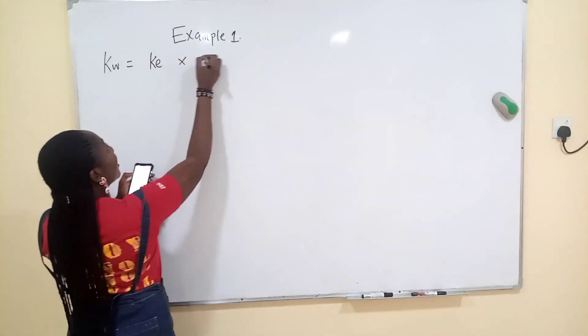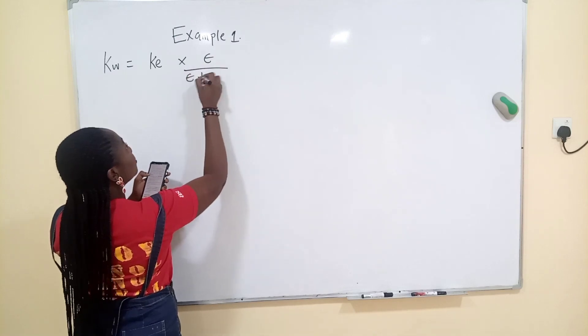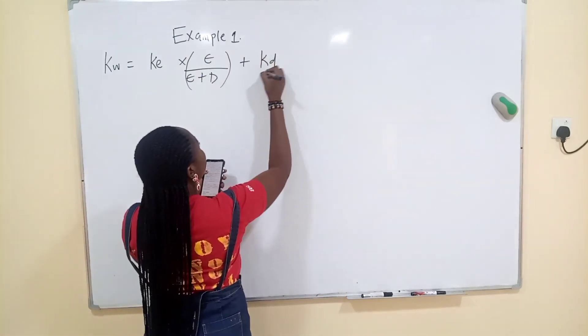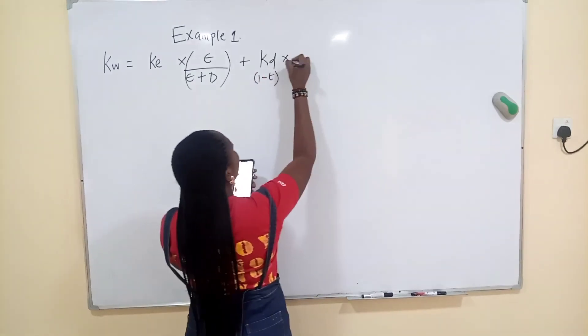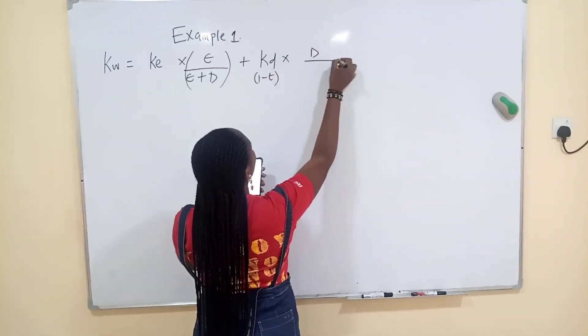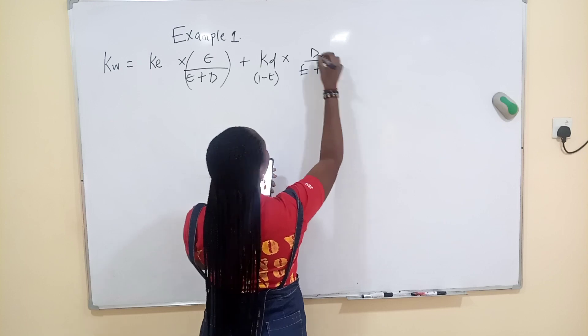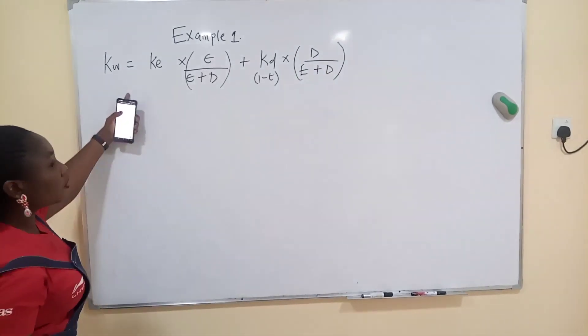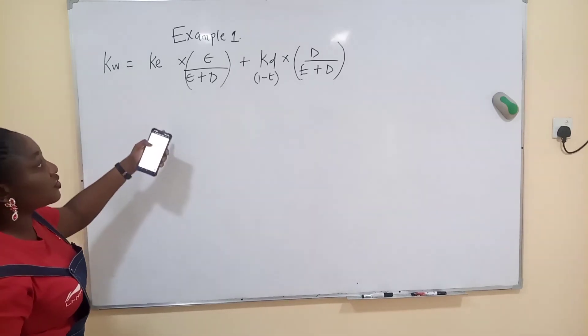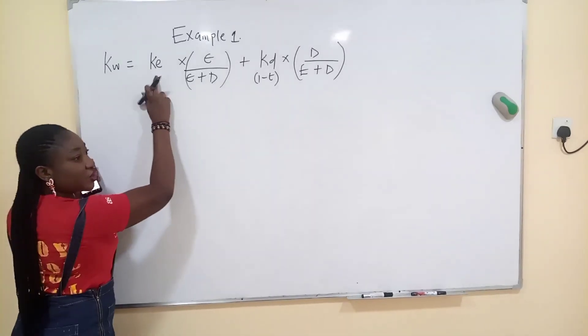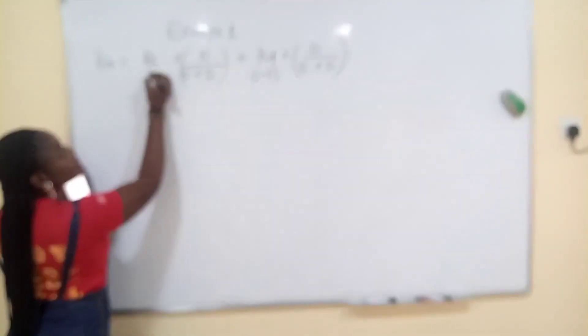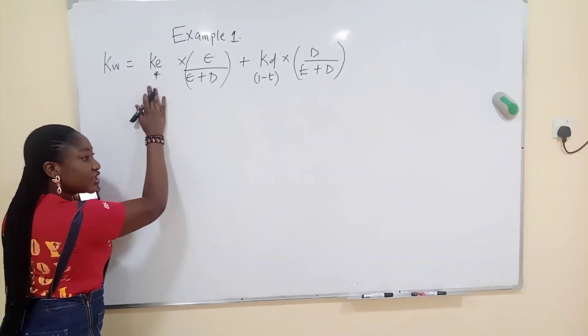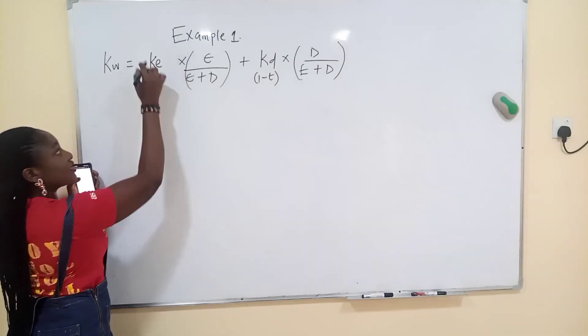And you know that your formula for WACC is what? Cost of equity times equity over equity plus debt, plus cost of debt which multiplied by 1 minus tax, times debt over equity plus debt. Now look at all of these. You're now asking yourself, do you have these variables? This cost of equity is the major thing that will change. This is the major thing that will change because a new project will affect this thing.